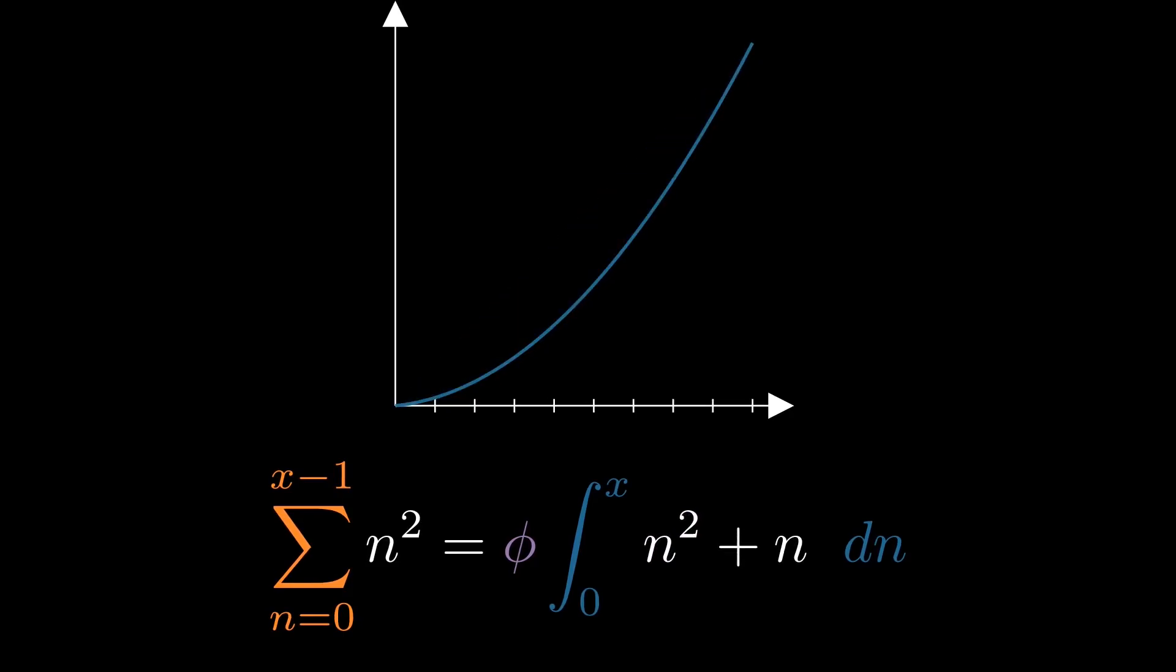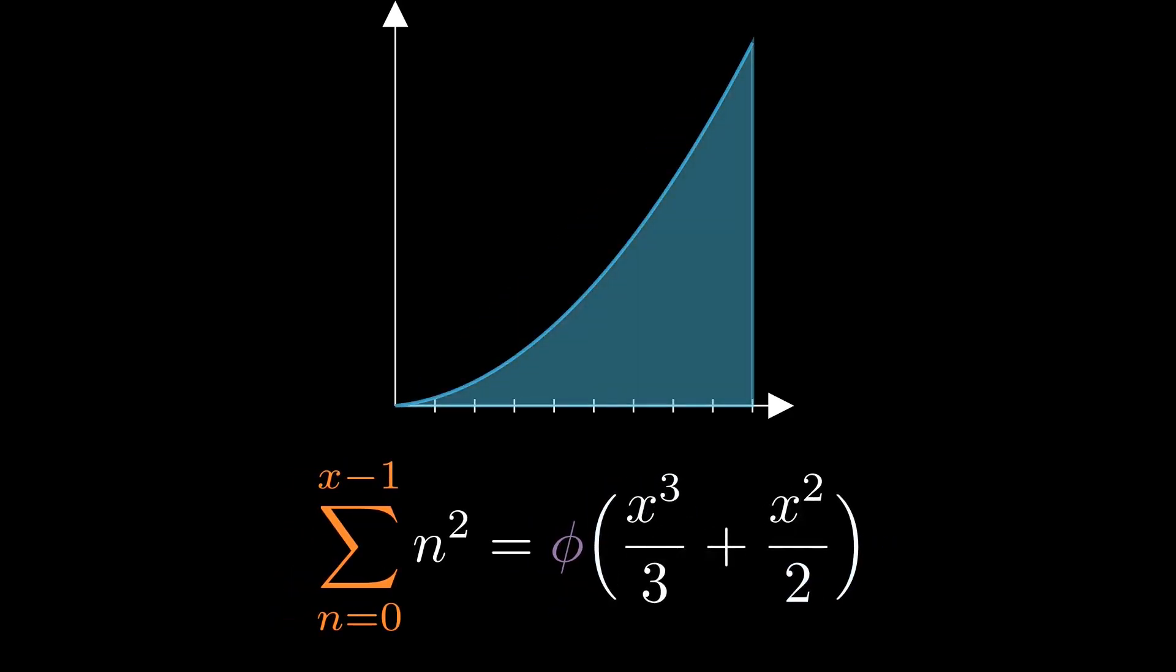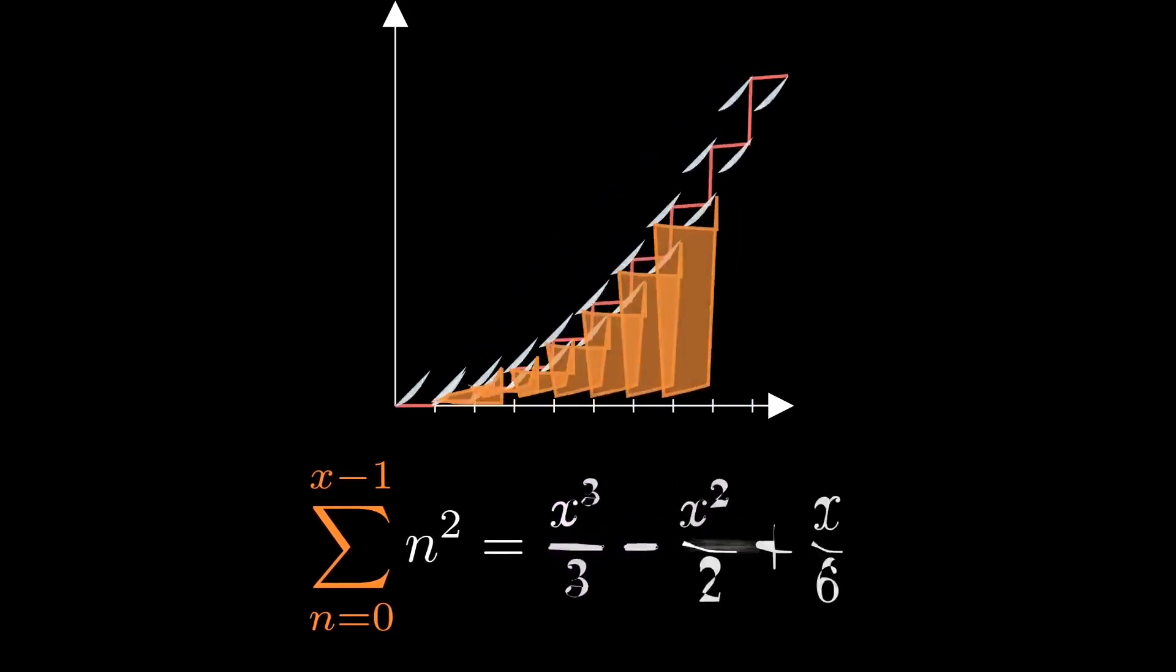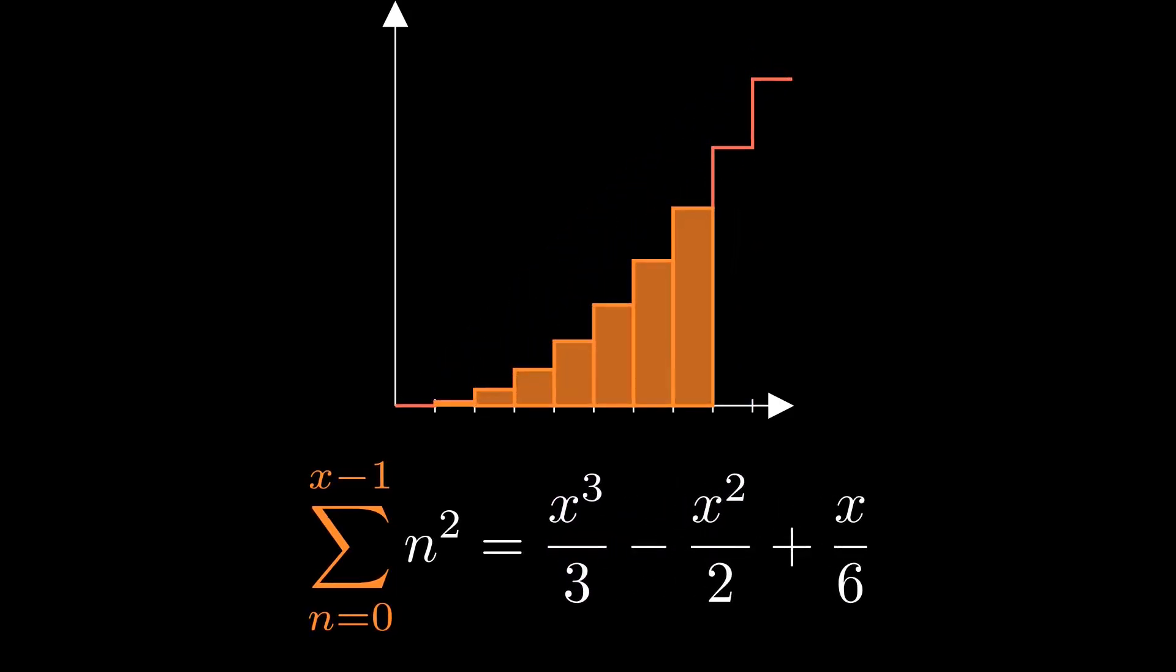would be to take the inverse phi, integrate from 0 to x, and then apply phi to that integral, giving us the same answer we just found. Now clearly, to be able to use this umbral transformation, we need to know how to actually compute phi and its inverse. How do we do that?